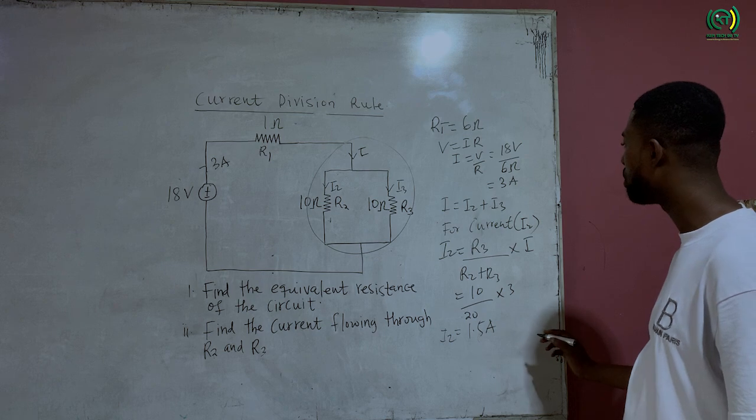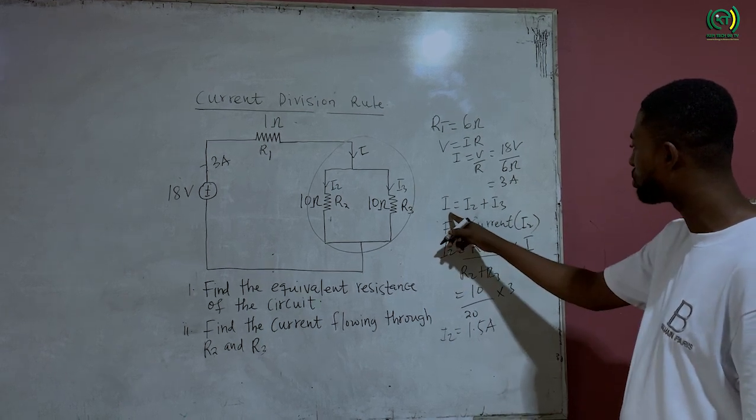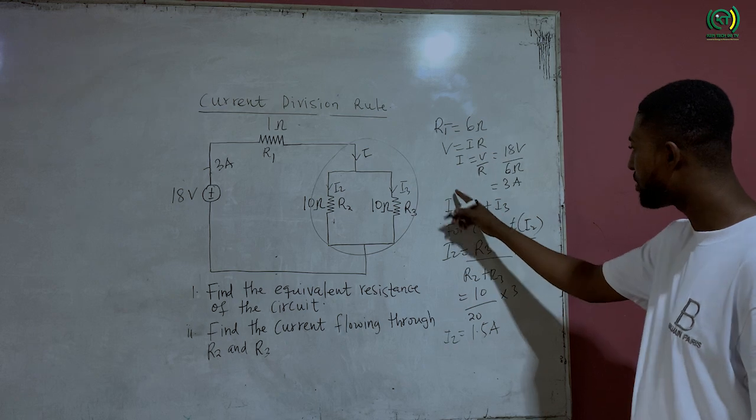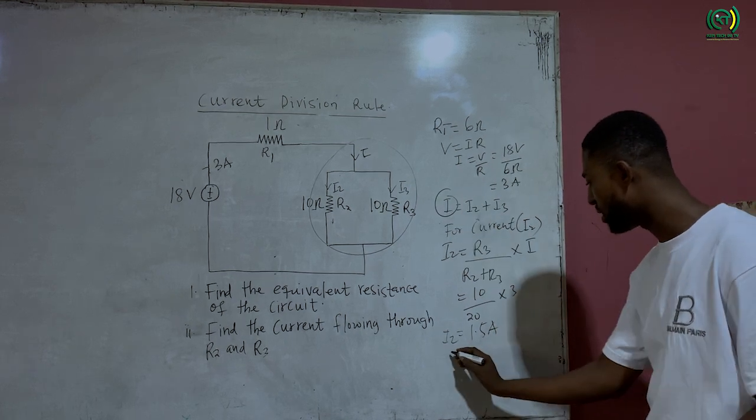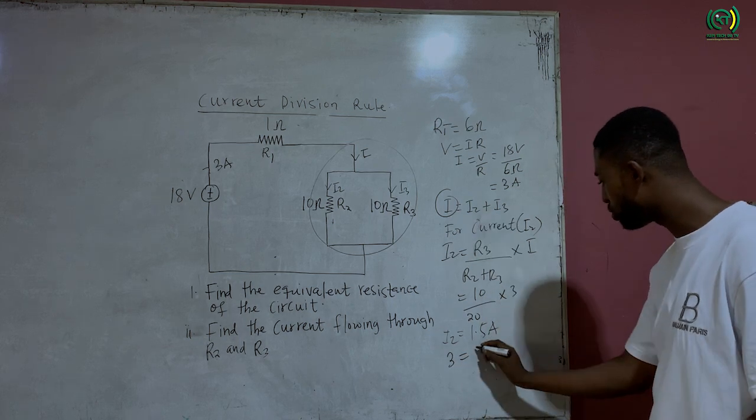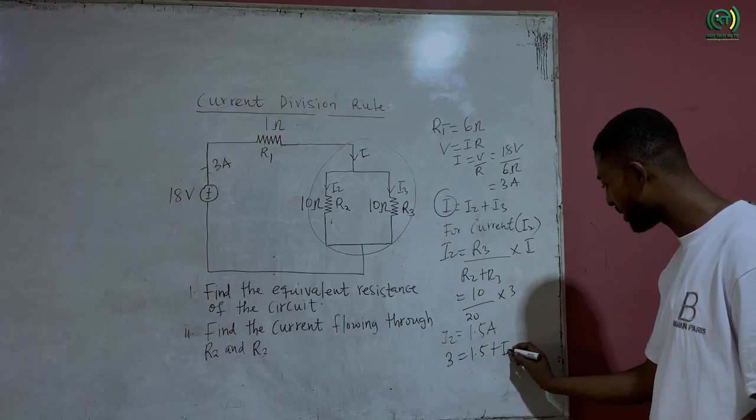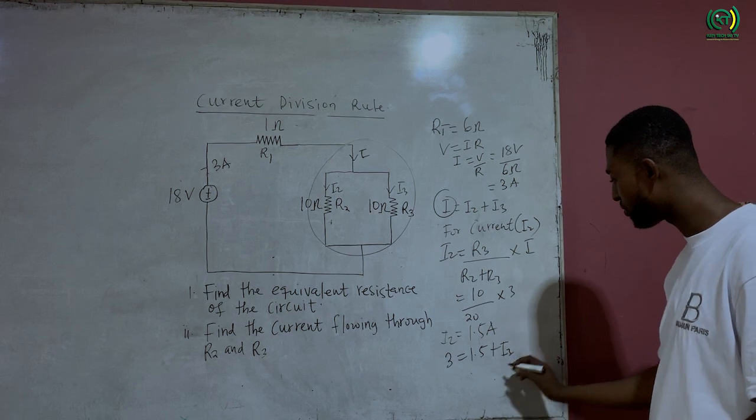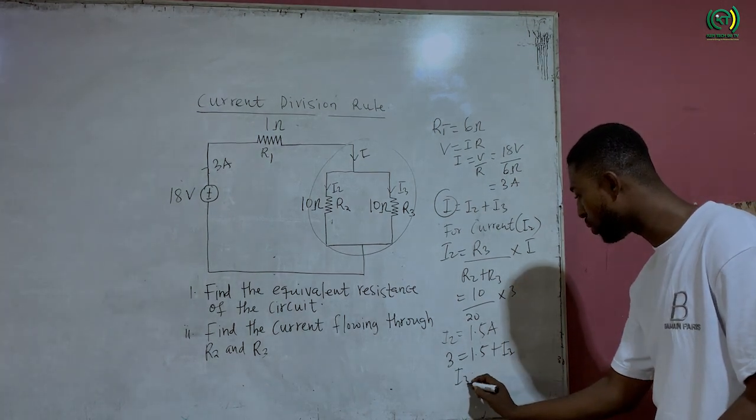Now if I2 is equal to 1.5 then definitely I3 is also going to be equal to 1.5 because we said I is equal to I2 plus I3. So if I have I to be equal to 3 and I have I2 to be equal to 1.5 plus I3, then I3 will be equal to 1.5 amps.